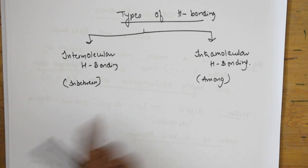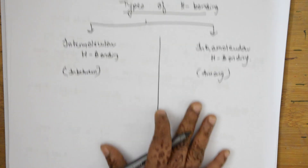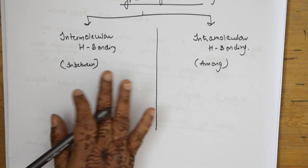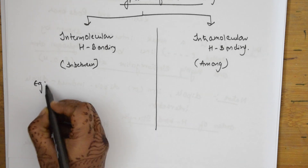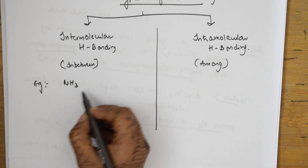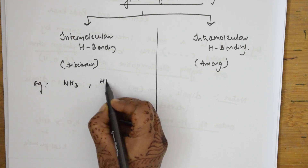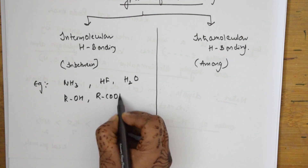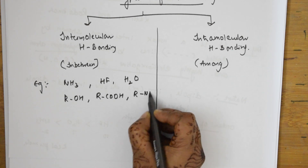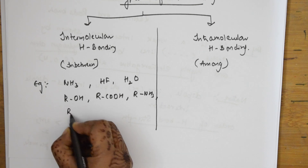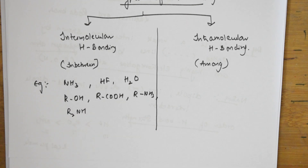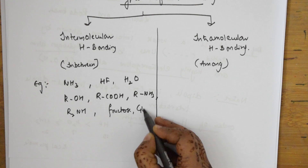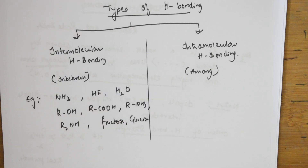Let us see some examples for both types. Intermolecular hydrogen bonding occurs between two different molecules of the same or different types — for example, NH₃, HF, H₂O, alcohols, acids, and even sugars like fructose and glucose all show intermolecular hydrogen bonding.